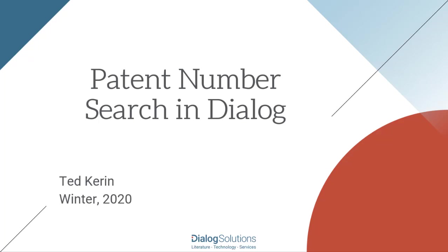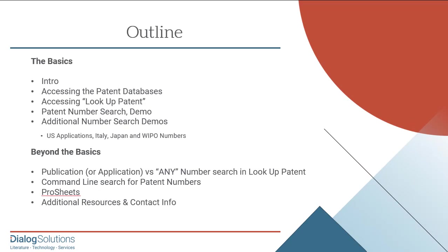One of the most common types of patent search is a patent number search, where you have a number and need to find the actual patent record identified by that number. Dialog has a search tool that will help you find patents that go with these numbers, regardless of whether the number is in a standard format or some variation that may look quite different. In this video, I'll show you how to access the Lookup Patent Number tool and how to use it. We'll look at some numbers from countries that have special number formatting issues, and how Dialog helps you with that. Toward the end, I'll show you some of the different results you may get depending on whether you search for your number as a publication or as an application, or if you use the Any button for a broader search. We'll briefly look at how you can use Command Line to search for patent numbers for specific kinds of results.